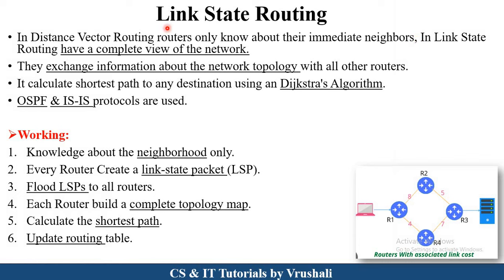The next one is link state routing. In distance vector routing, you calculate the distance of immediate neighbors only. But in link state routing, you have a view of the complete network — exchanging information about network topologies. Link state routing uses Dijkstra's algorithm to calculate the shortest path and shortest distance. It also uses OSPF (Open Shortest Path First) and IS-IS protocol to calculate a particular shortest path.